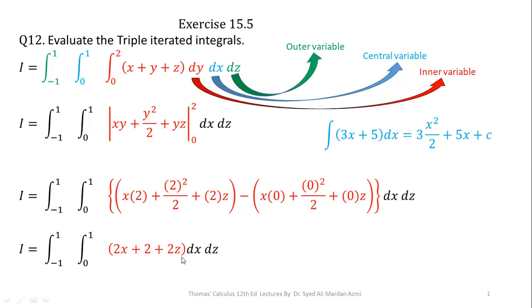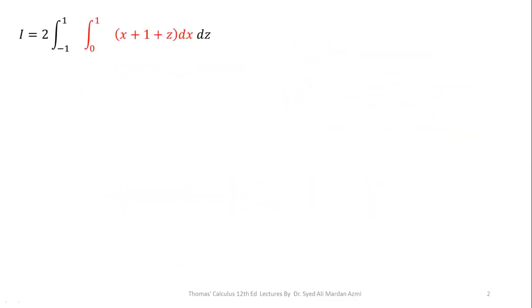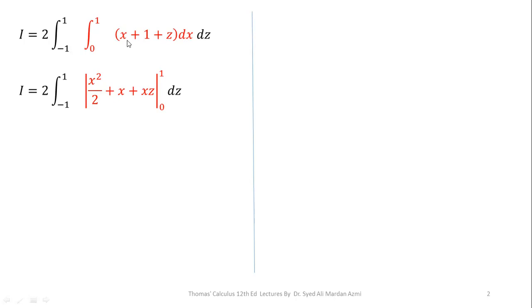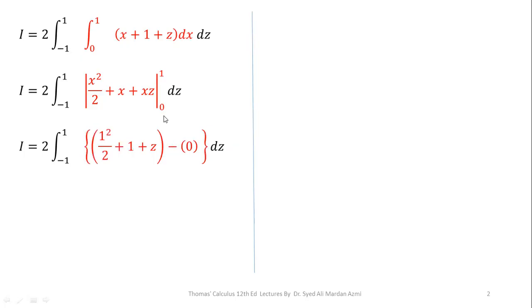Now in the next step, we will perform integration with respect to x on the function 2x plus 2 plus 2z. Note that with respect to x, 2 and 2z are constant terms. Taking 2 outside as a common factor, the integration of x is x squared over 2, the integration of 1 is x, and the integration of z is xz. Applying the Fundamental Theorem of Calculus, the lower limit gives 0, and we are left with 1 over 2 plus 1 plus z, which simplifies to 3 over 2 plus z, for the limits minus 1 to 1.